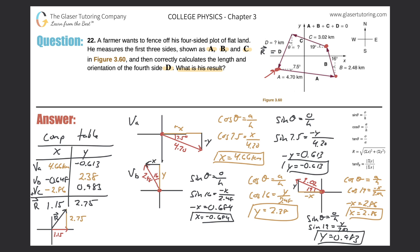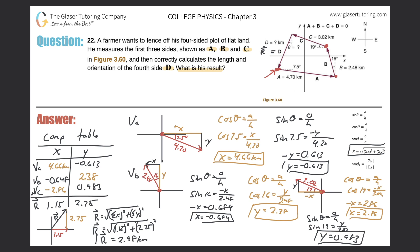How do we find that? We can use the Pythagorean theorem: A squared plus B squared equals C squared, where C is the hypotenuse — that's the same as R. The resultant vector equals the square root of the sum of all the X's squared plus the sum of all the Y's squared. So the resultant equals the square root of 1.15 squared plus 2.75 squared. Plugging into the calculator — second square root of 1.15 squared plus 2.75 squared gives us a value of 2.98 kilometers.